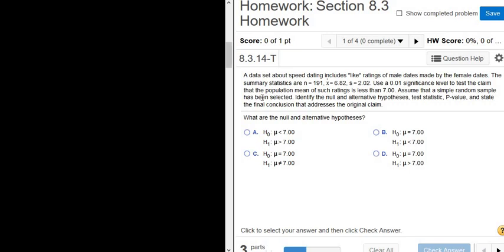In this problem, we have a hypothesis test for a mean. Let's go ahead and read through the question. A data set about speed dating includes like ratings of male dates made by the female dates. The summary statistics are n equals 191. n is always our sample size. So n is equal to 191.